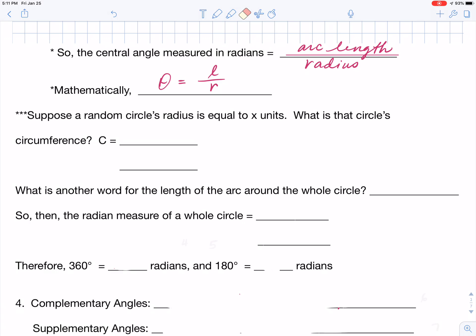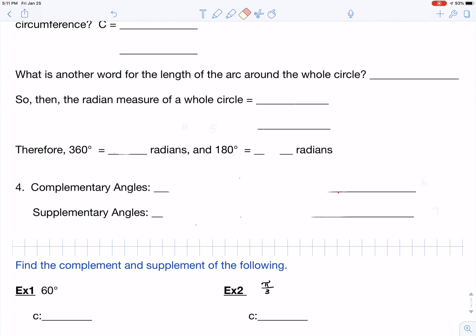And then after that you're going to answer the following question. What's another word for the length of the arc around the whole entire circle? And then lastly, the radian measure then of the whole entire circle is going to be what? So those are the three things that you're going to answer for your embedded question. Write those down, bring them to class.